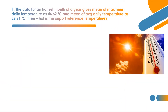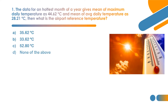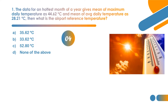The first question: the data for the hottest month of the year gives mean of maximum daily temperature as 44.62 degrees Celsius and mean of average daily temperature as 28.21 degrees Celsius. Then what is the airport reference temperature? Two data are given: mean of maximum daily temperature, and average daily temperature. We have to find airport reference temperature using both values.